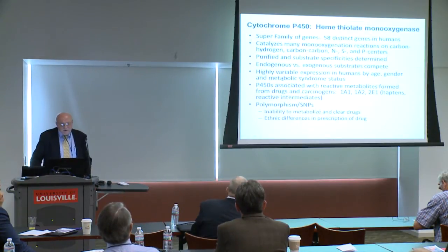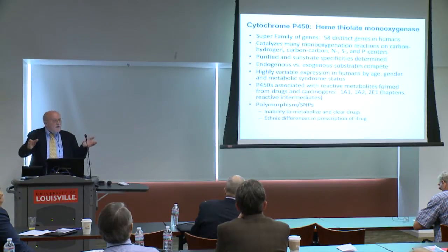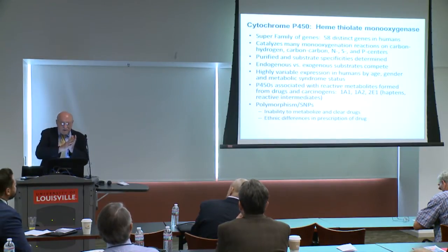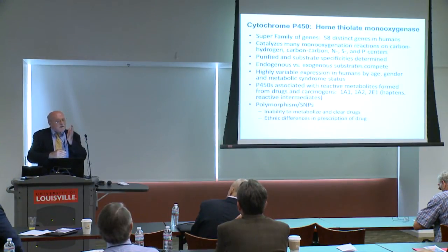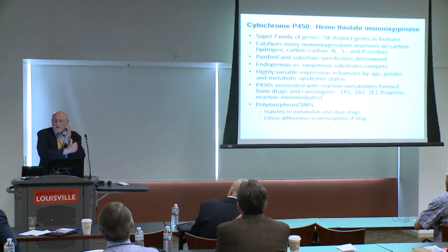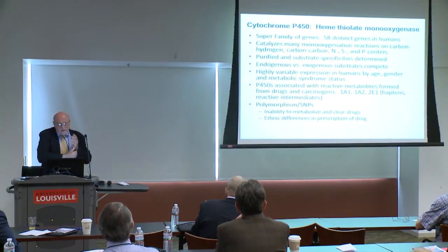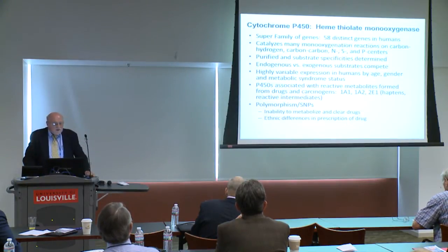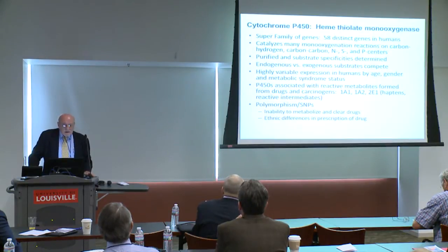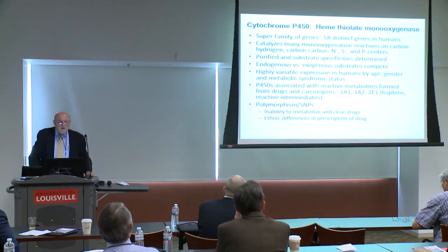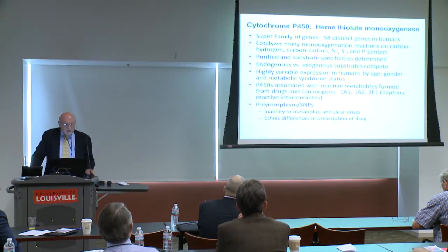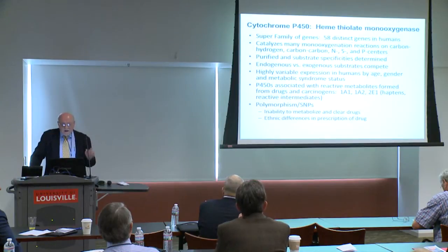The CYPs are a heme thiolate monooxygenase, meaning they have a heme group at their active site. It's a heme thiolate because there's a fifth coordination position — sulfur — that coordinates with the heme. In humans, there are 58 genes, so there's quite a diversity of them. They catalyze monooxygenase reactions at carbon, carbon-hydrogen, carbon-carbon, nitrogen, sulfur, and phosphorus centers.